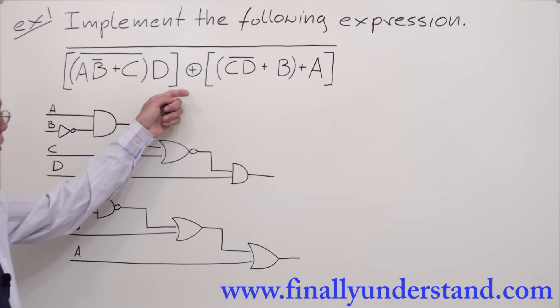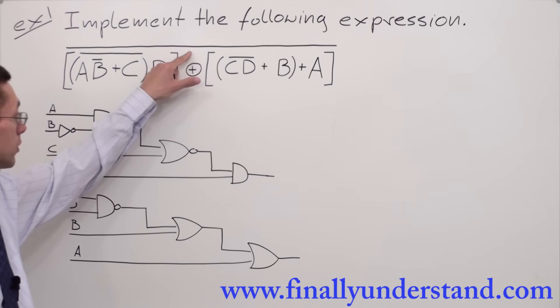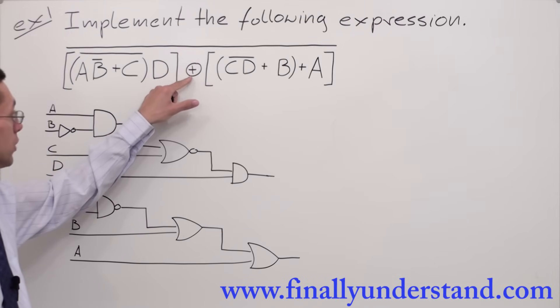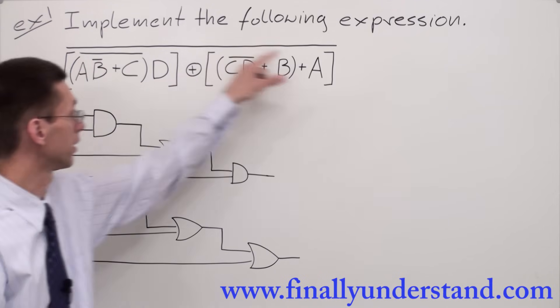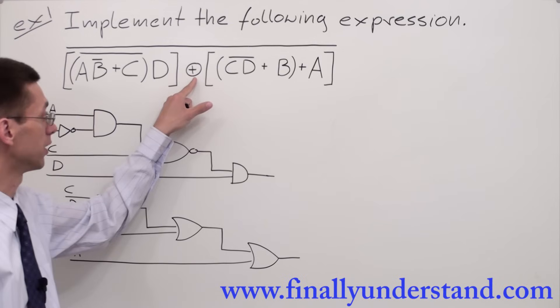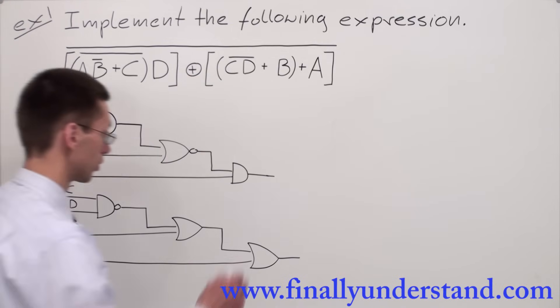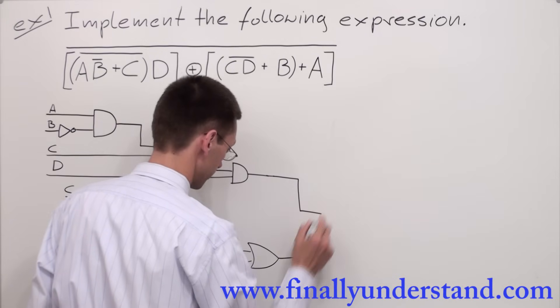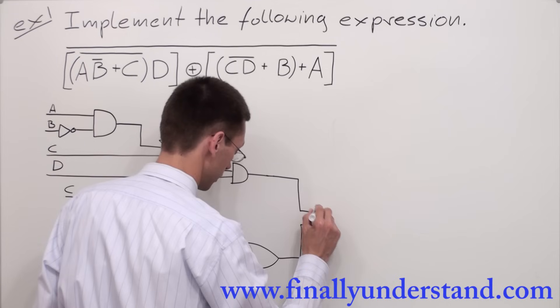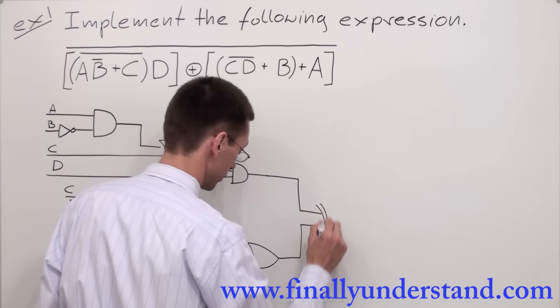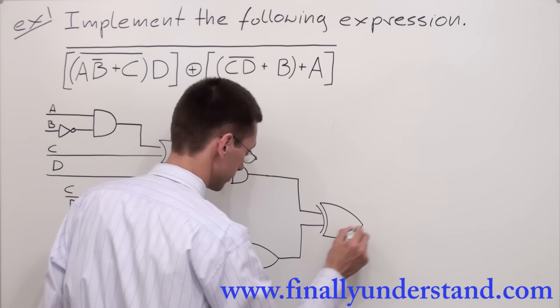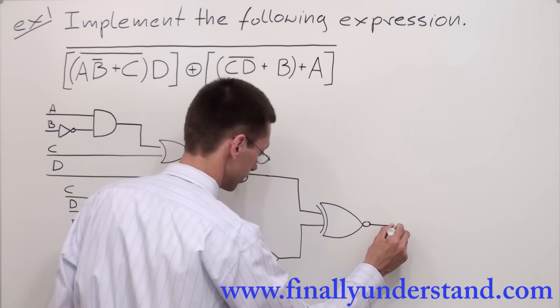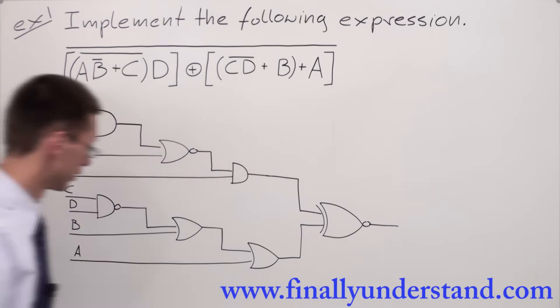Now, if you look at our original expression, you will notice that these two circuits are EXCLUSIVE NORed together. Why? Because this symbol stands for EXCLUSIVE OR, and because we have the bar over that sign, it means this is EXCLUSIVE NOR. Therefore, we have to connect these two circuits by the EXCLUSIVE NOR gate. This is my answer.